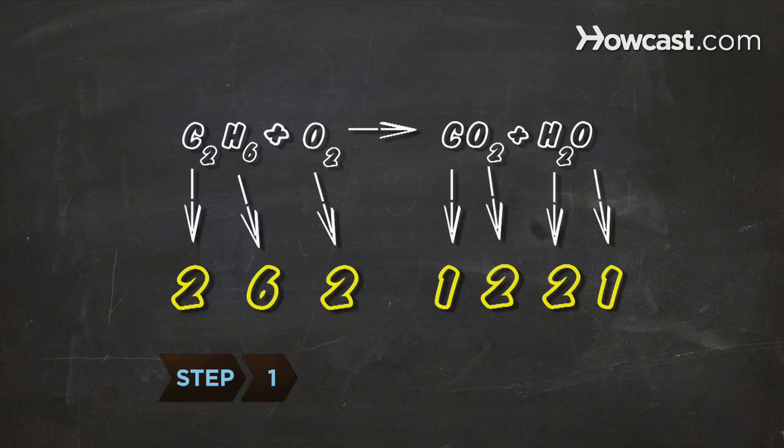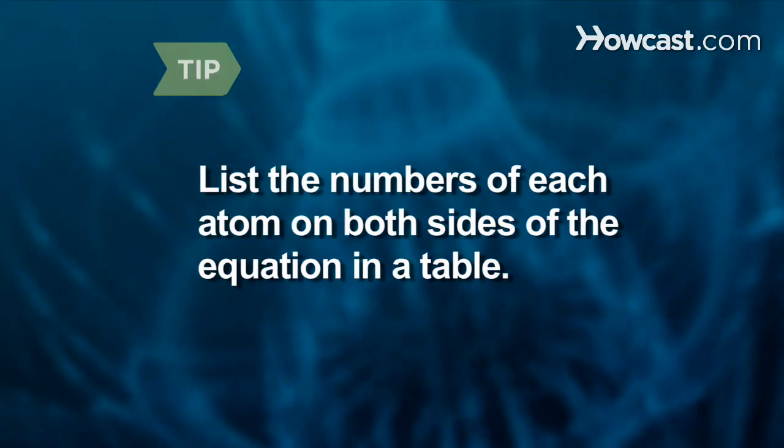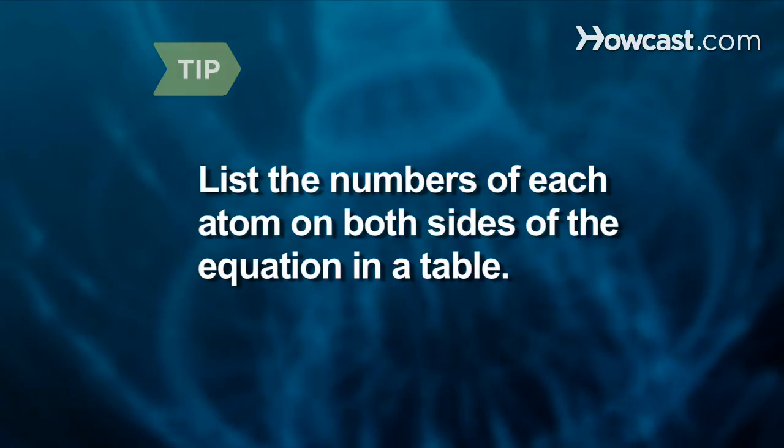Step 1: Determine how many atoms of each type are on each side of the equation. List the numbers of each atom for the left side and for the right side.